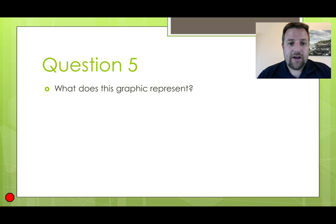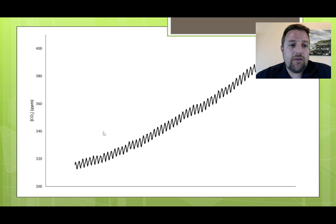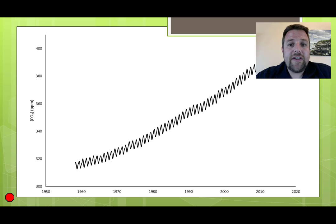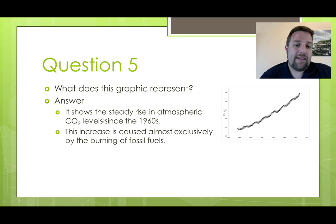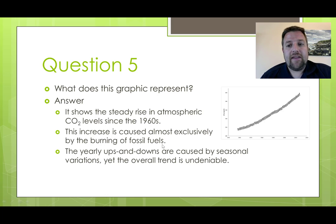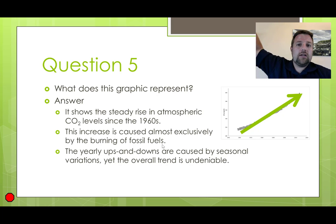Question five goes back to global warming. On the y-axis we have carbon dioxide concentration in the atmosphere in units of parts per million, running from 300 to 400 ppm. Along the x-axis, 1950 through today. What we see is an up and down but very consistent increase overall in the concentration of CO2 in the atmosphere — one of our major pieces of evidence for global warming, coming from the burning of fossil fuels. The yearly ups and downs are caused by seasonal changes: in summer we see a rise in CO2, in winter it goes down a bit, but the very next summer it goes up even more. Overall, it just keeps going up.